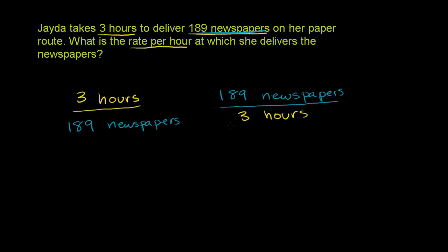Now we want to write it in as simple a form as possible. Let's see if the top number is divisible by 3. 1 plus 8 is 9, plus 9 is 18 — so that is divisible by 3. So let's divide both the numerator and the denominator by 3 to simplify things.